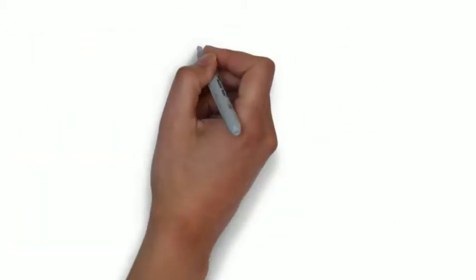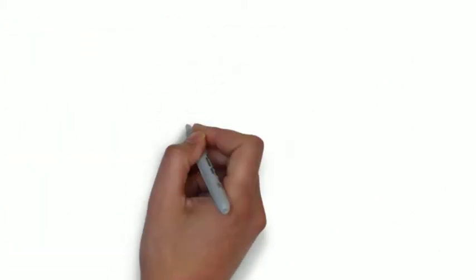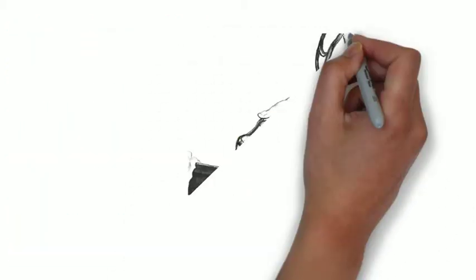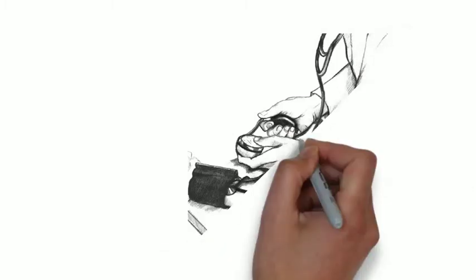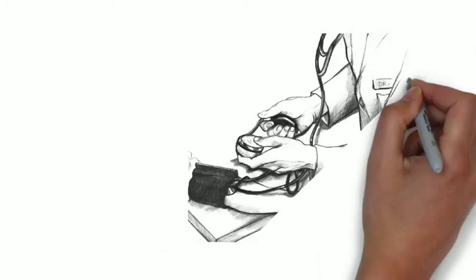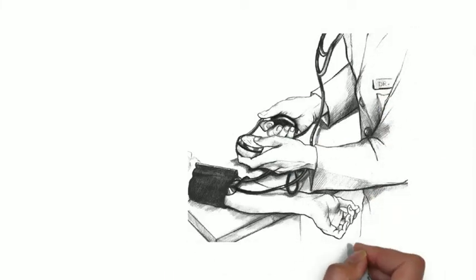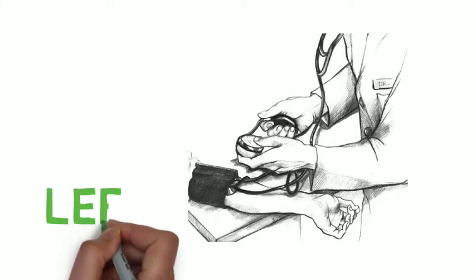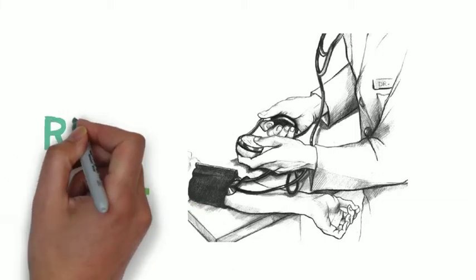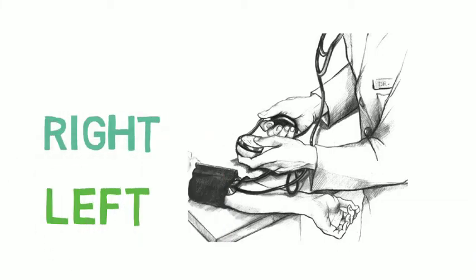When blood pressure is taken in a clinical setting, three separate readings should be taken one minute apart from each other to produce an average. The first reading should be taken on the left arm, then on the right, and then back to the left.